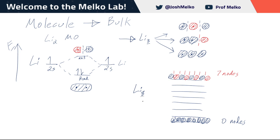For the same reason, we can fill up lithium-8, filling up the four lowest molecular orbitals. Orbitals 5, 6, 7, and 8 will be unoccupied. These eight valence electrons from the eight lithium atoms become eight molecular orbitals, four of which are occupied and four of which are unoccupied.